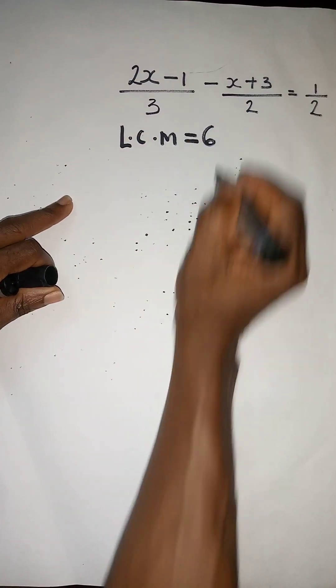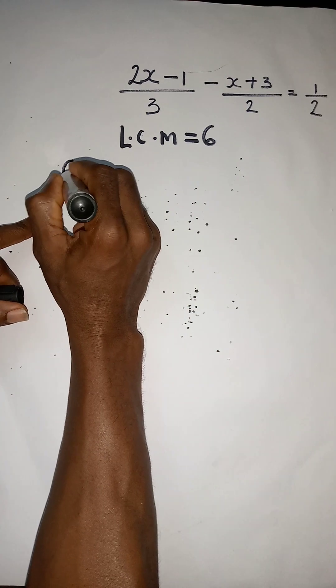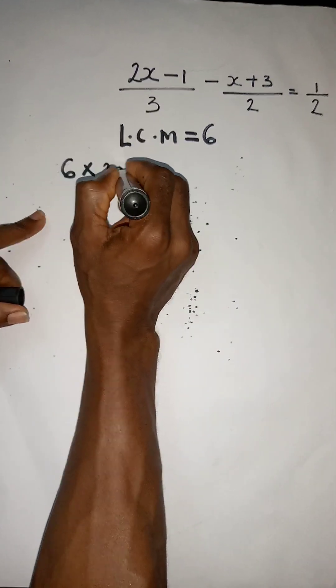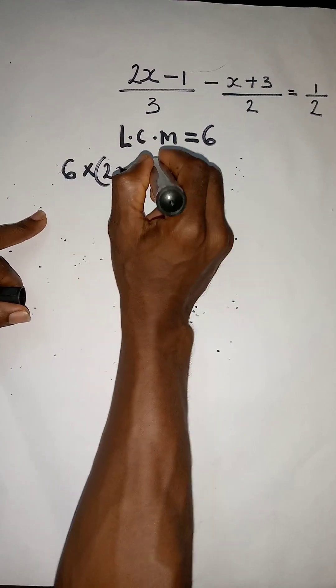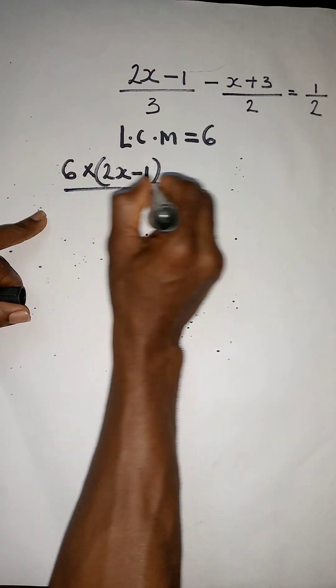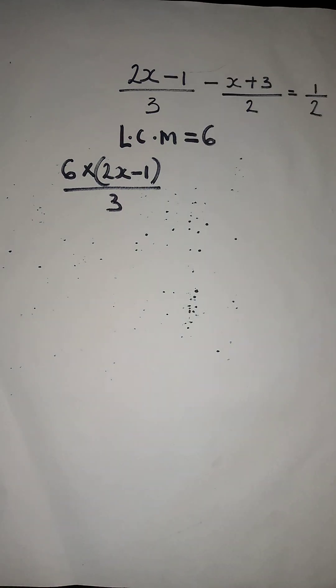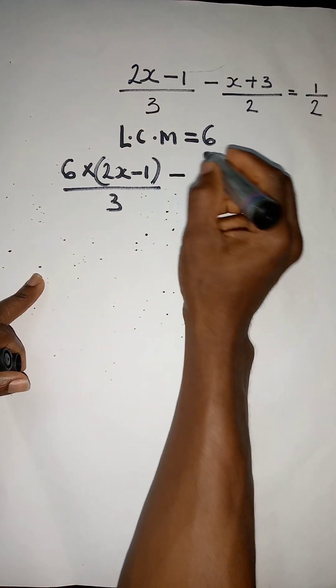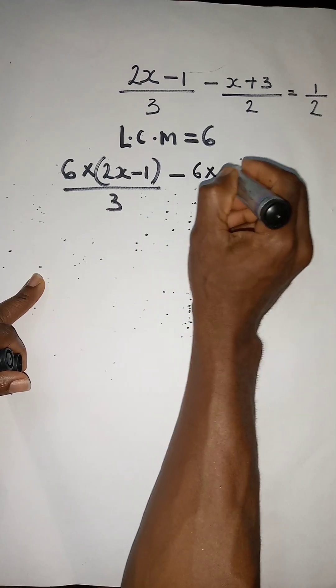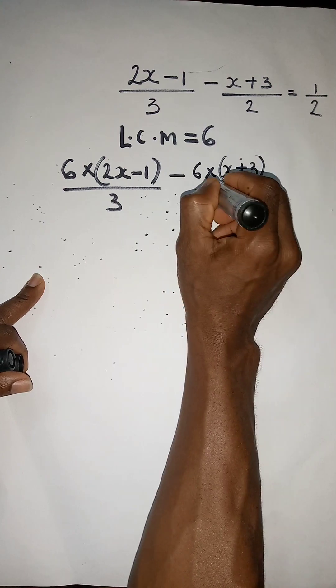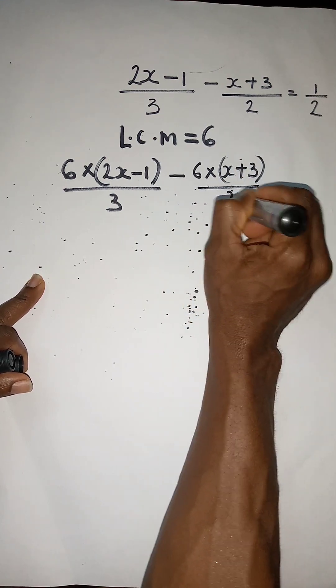So let's multiply each of the terms with 6. Here we have 6 times (2x-1) all over 3, and we're going to have minus 6 times (x+3) all divided by 2, equal to 6 times 1 over 2.